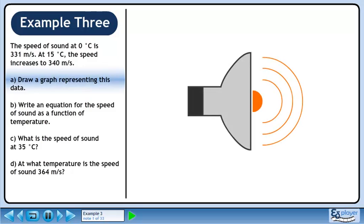The speed of sound at 0 degrees Celsius is 331 meters per second. At 15 degrees Celsius, the speed increases to 340 meters per second.